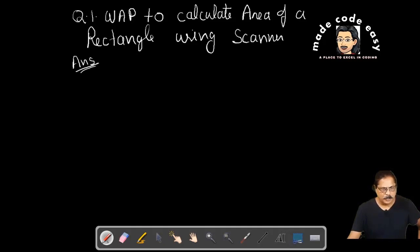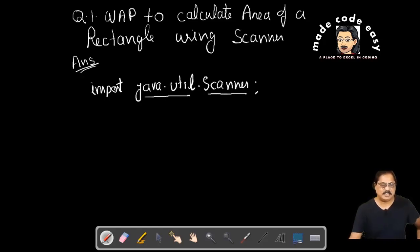When we make a program, the first statement we write down is import java.util.Scanner. Scanner is a class and java.util is a package. Then we write class name, so we write class AreaOfRectangle.